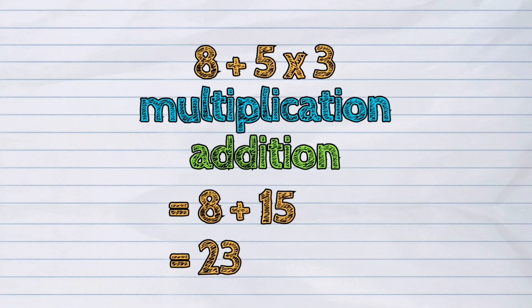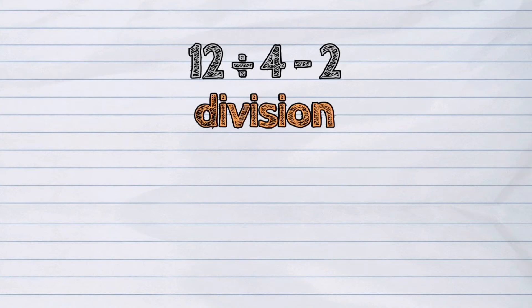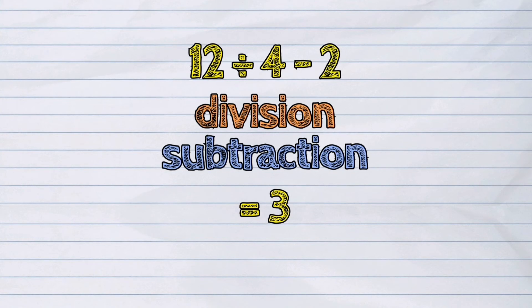Next, 12 divided by 4 minus 2. The first operation in this expression is division. 12 divided by 4 is 3. Then subtraction. 3 minus 2 is 1.